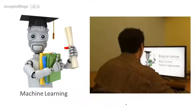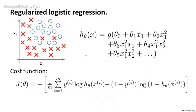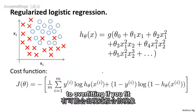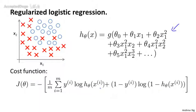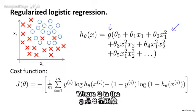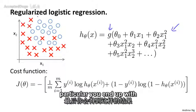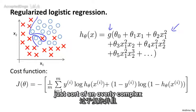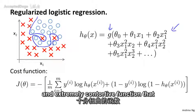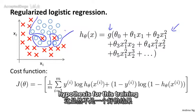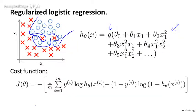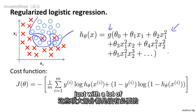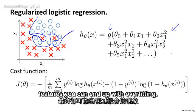So here's the idea. We saw earlier that logistic regression can also be prone to overfitting if you fit it with very high-order polynomial features, where g is the sigmoid function. In particular, you may end up with a hypothesis whose decision boundary is this sort of overly complex, extremely contorted function that really isn't such a great hypothesis. More generally, if you have logistic regression with a lot of features, not necessarily polynomial ones, but just with a lot of features, you can end up with overfitting.